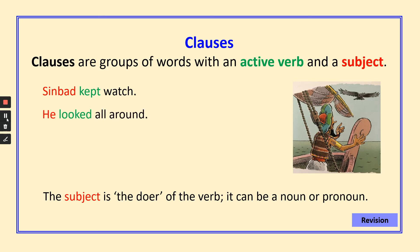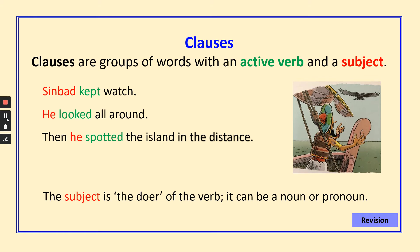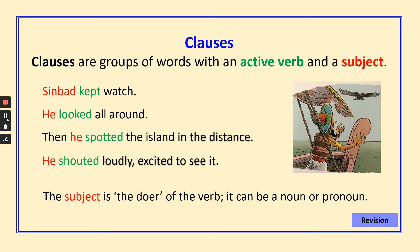He looked all around. Then he spotted the island in the distance. He shouted loudly, excited to see it. Just a reminder: the subject is the doer of the verb — it can be a noun, like Sinbad, or a pronoun, like he.